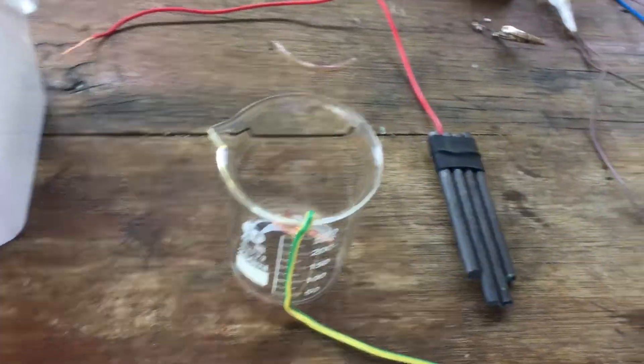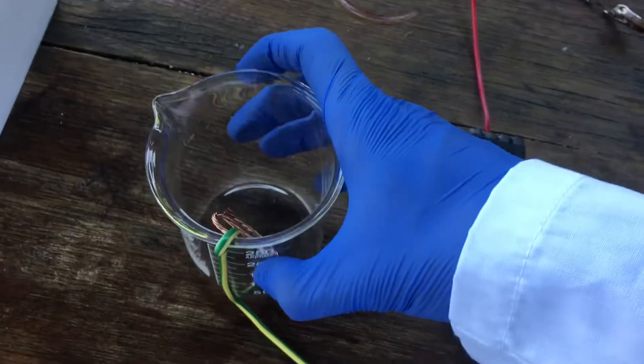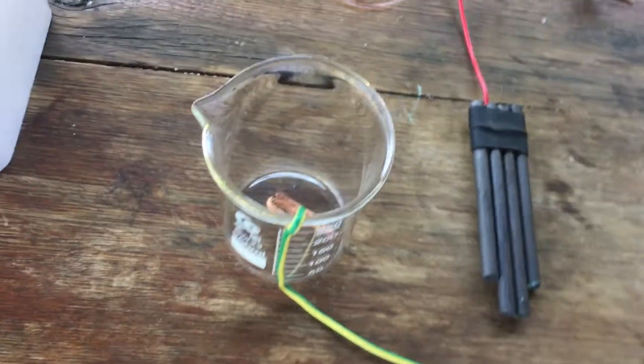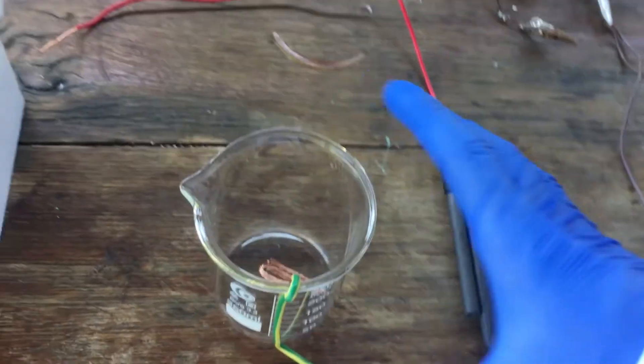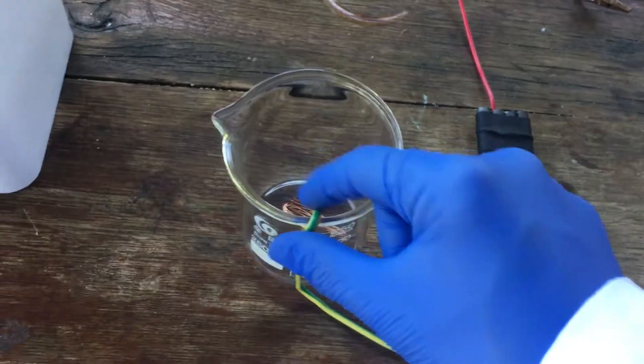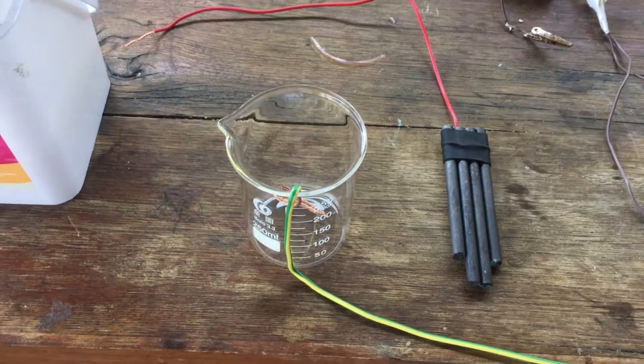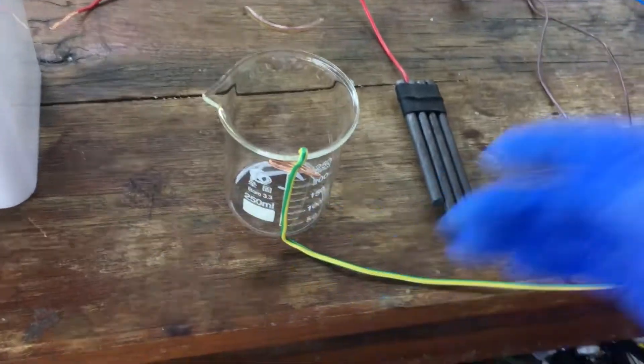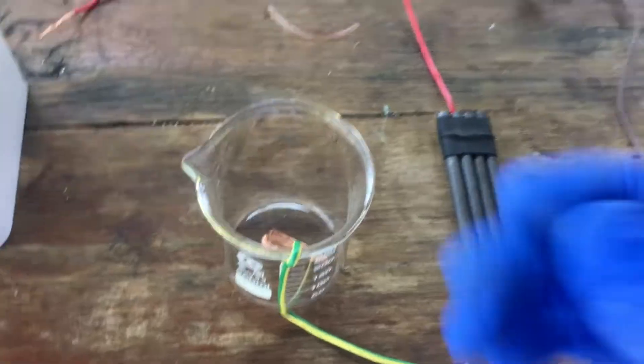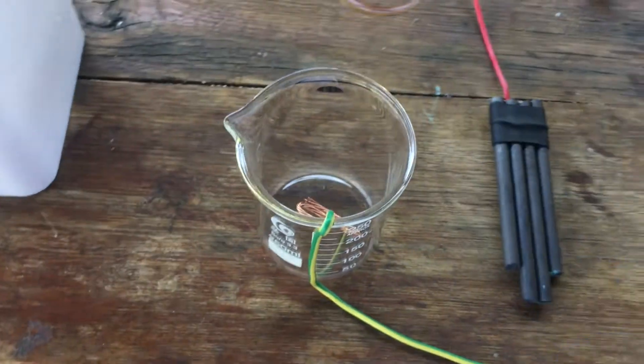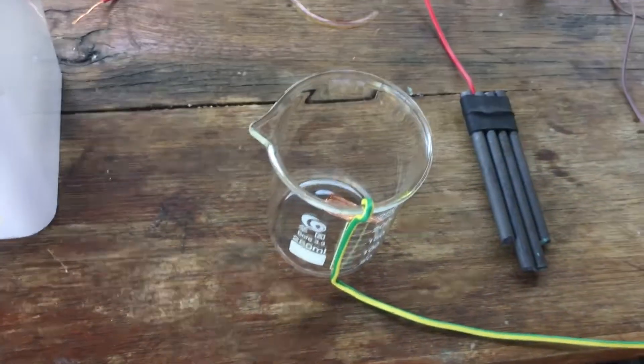The next thing we need is the actual electrolysis cell. I'm just going to be using a glass beaker, 250 milliliters. And then we also need our electrodes. Now, the cathode, that's nice and easy. Copper wire is definitely the best cathode you can have for this. It shouldn't corrode or anything in the conditions of the cell.